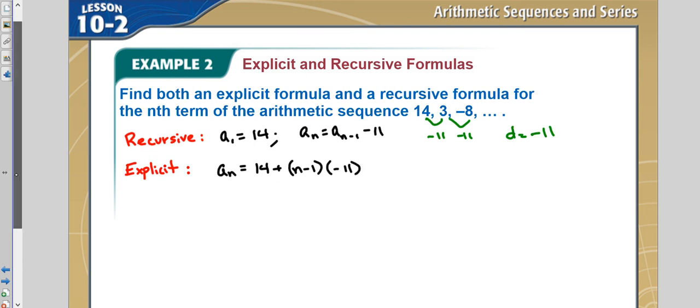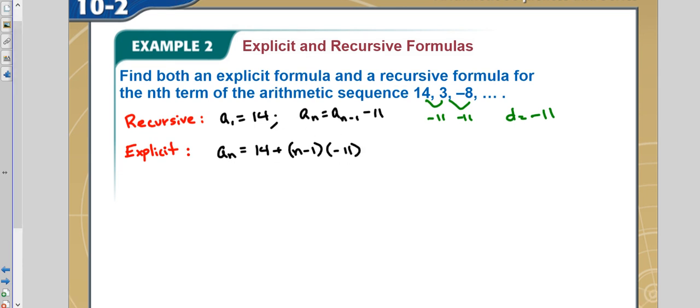Now some people leave it like this, but that's not simplified math. So I'll simplify it. We'd have 14 plus, we need to distribute this. So when I distribute that, it's now minus 11n. And then I'd have a negative 1 times a negative 11, which becomes a positive 11. I simplify combining my like terms. I would have 25 minus 11n. This is my formula for explicit.